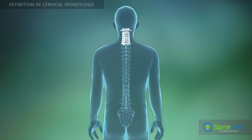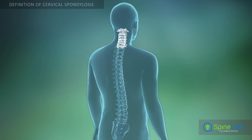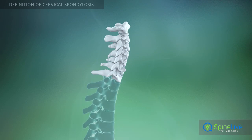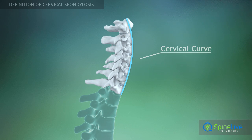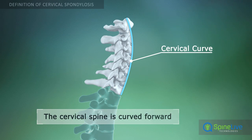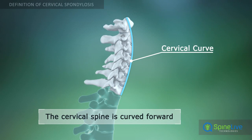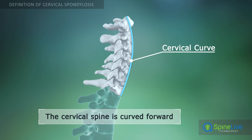The cervical region of the spine is curved forward. This curving helps to absorb pressure, vibrations, and shock that occur with movement.